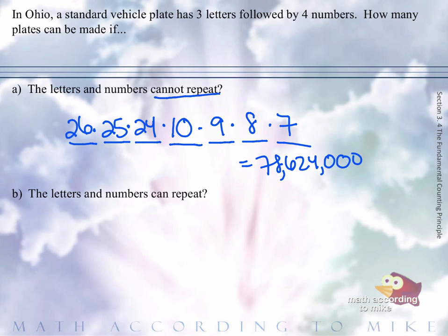But now notice in part B, we drop the restriction. When we have less restrictions, that means we should expect higher results. So the letters can repeat, so these can be any of the 26 letters. The numbers can repeat, so these can be any of the 10 numbers.